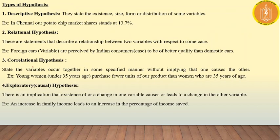There are several types of hypotheses. First, descriptive hypothesis — as the name suggests, it describes a fact. It states the existence, size, form, and distribution of some variable. Second, relational hypothesis — these are statements that describe a relationship between two variables, which may be independent or dependent variables. For example, eating ice cream leads to a rise in temperature. This is a tentative statement telling the relationship between two variables.